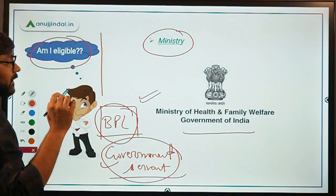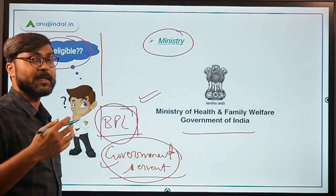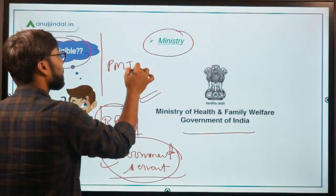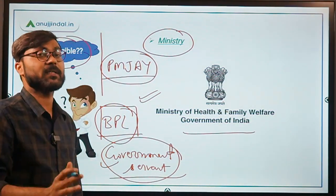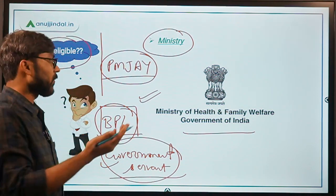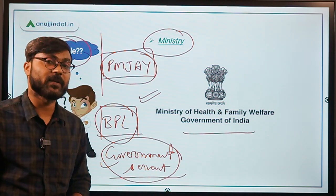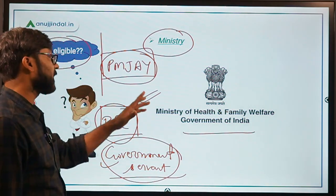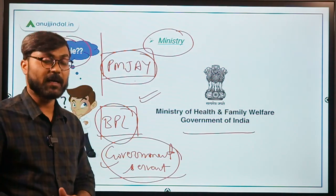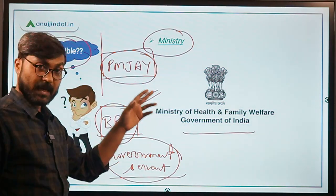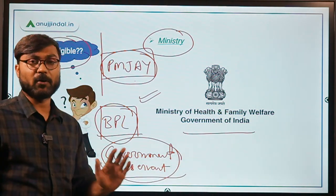Another important point: persons who are already enrolled in or already taking benefits of the Pradhan Mantri Jan Arogya Yojana — also known as Ayushman Bharat — are also not eligible to get benefits under this scheme. The government would not provide double benefits to the same person. So government servants and their families, and Ayushman Bharat beneficiaries, are excluded.